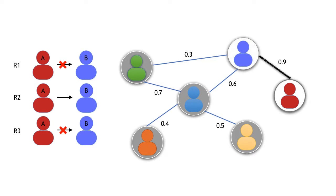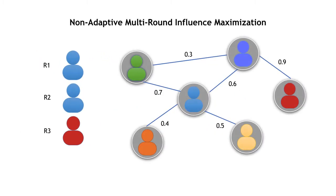Now let's look at two different settings of the multi-round model. First, let's talk about the non-adaptive setting. The non-adaptive setting requires selecting the seed node of each round at the beginning.